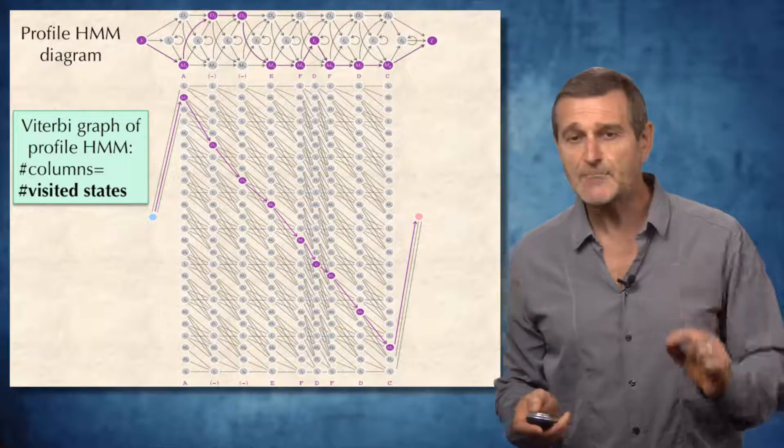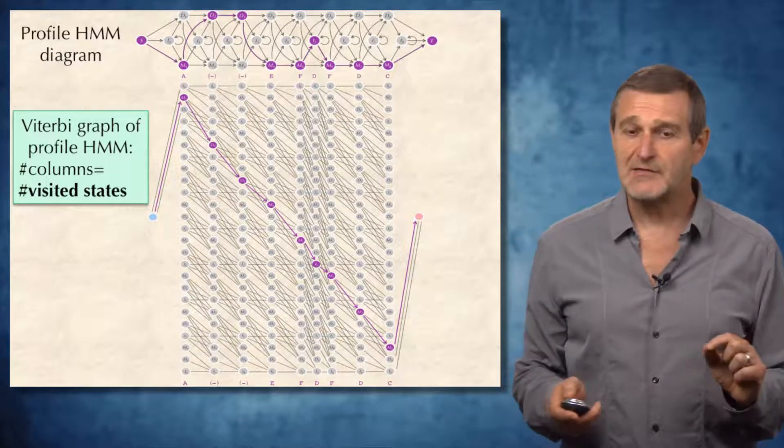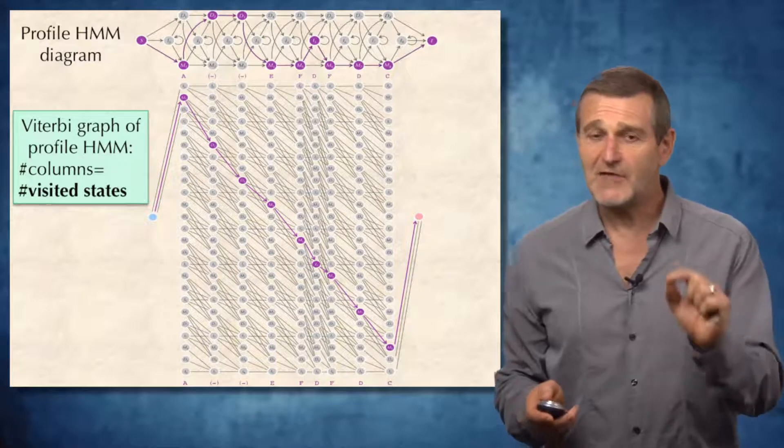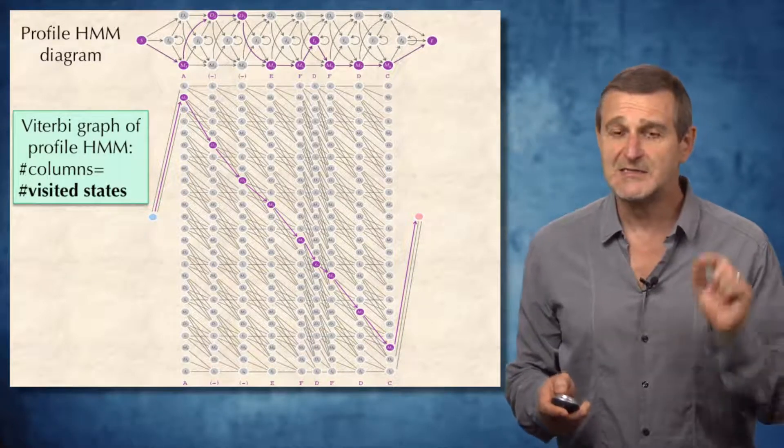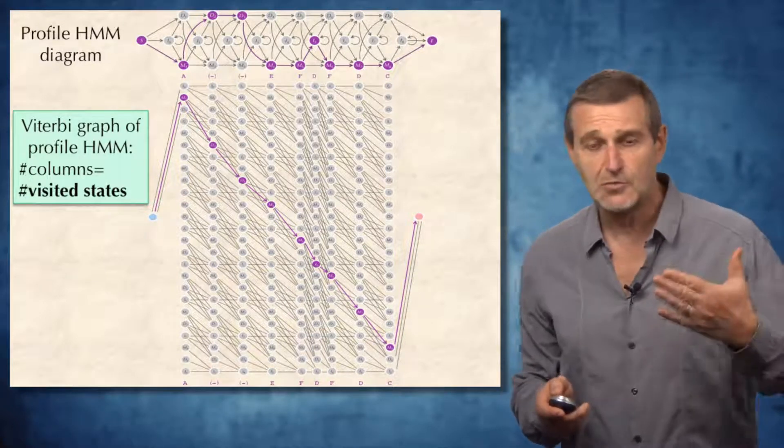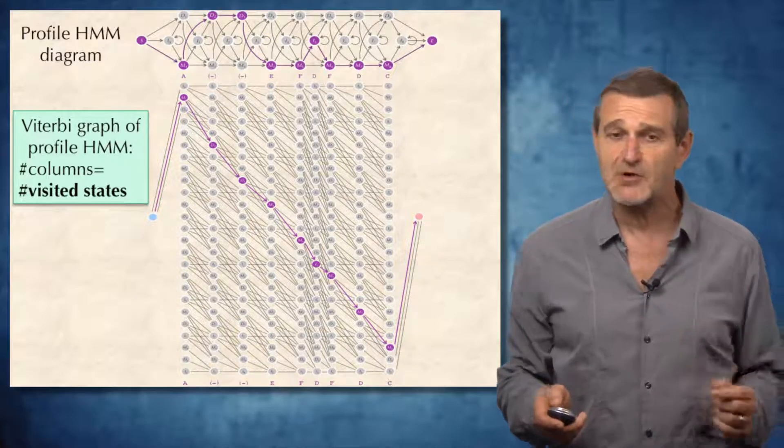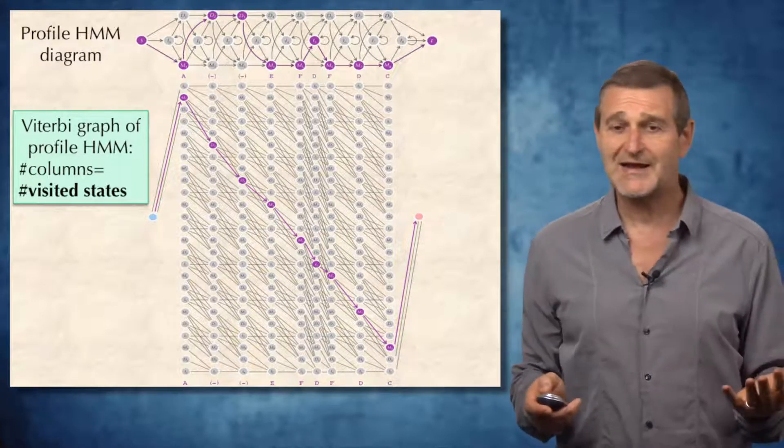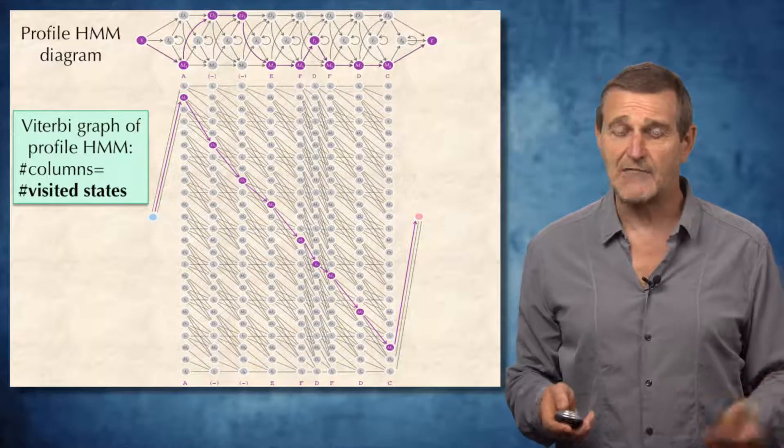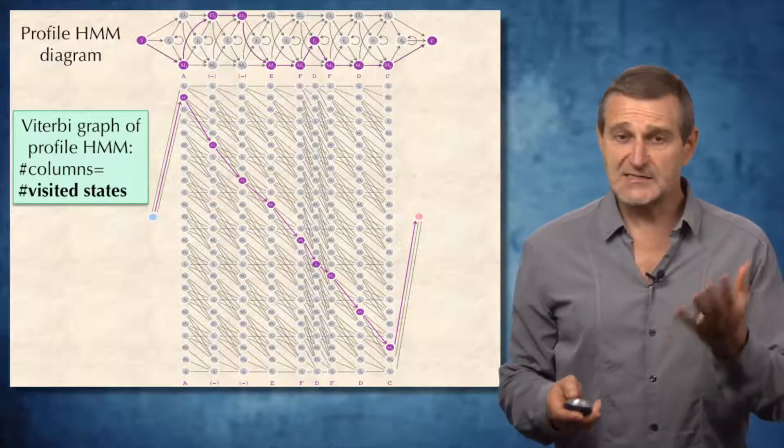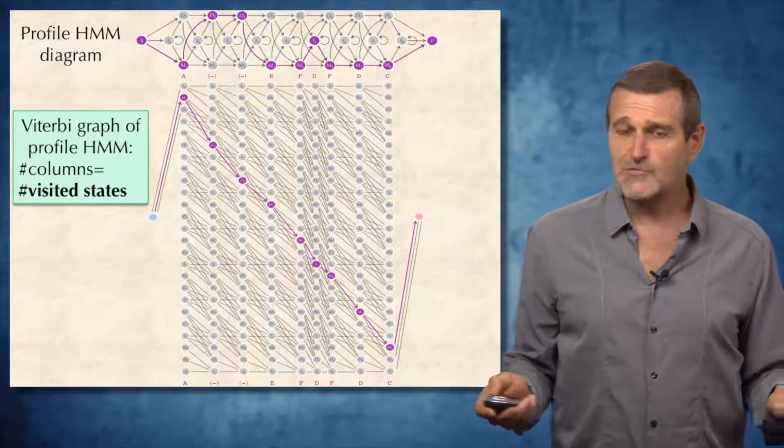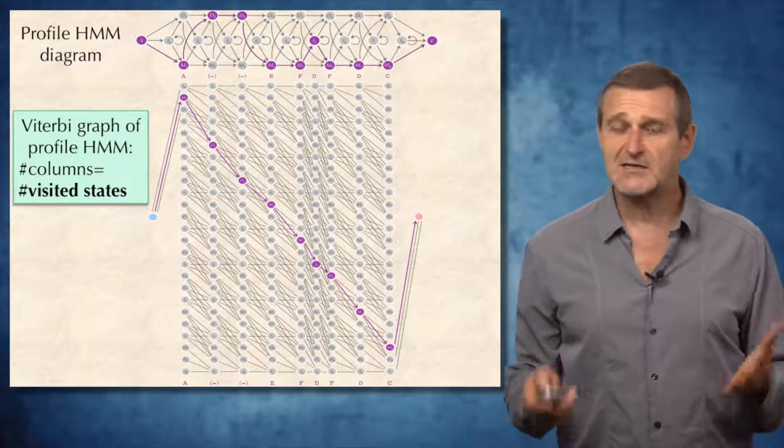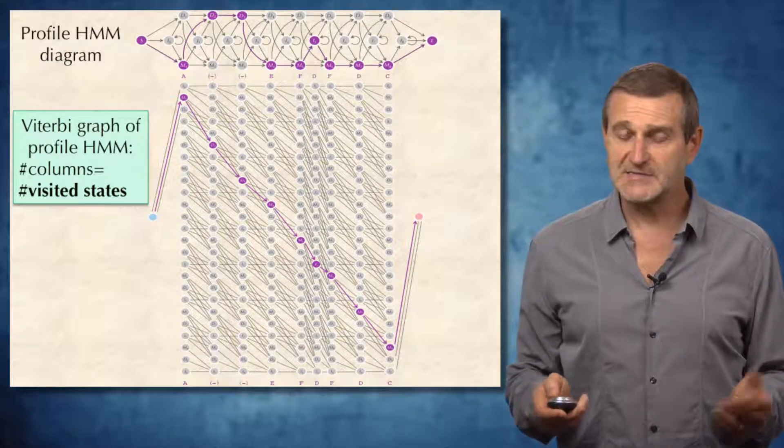There is one problem with this Viterbi graph. We don't know in advance what will be the number of visited states when we look at the newly sequenced protein. And therefore, it's not even clear how to construct this graph. For example, in this case, it has two deletion states, but how do we know this before we construct the Viterbi graph?